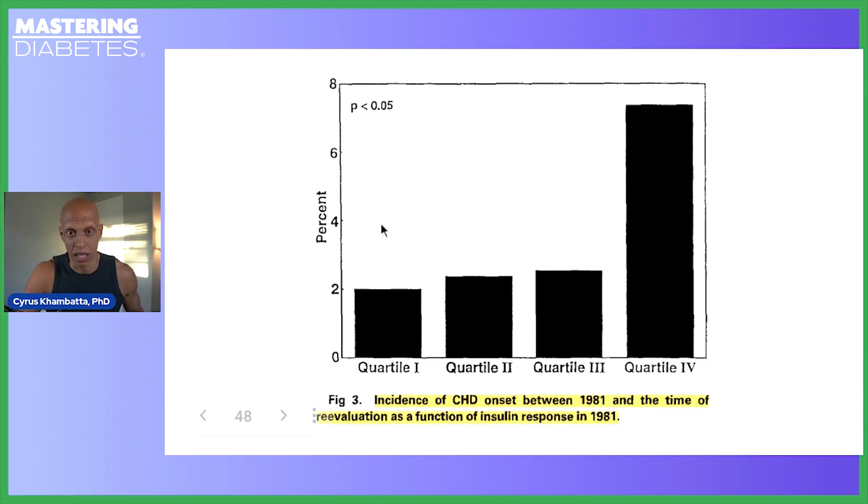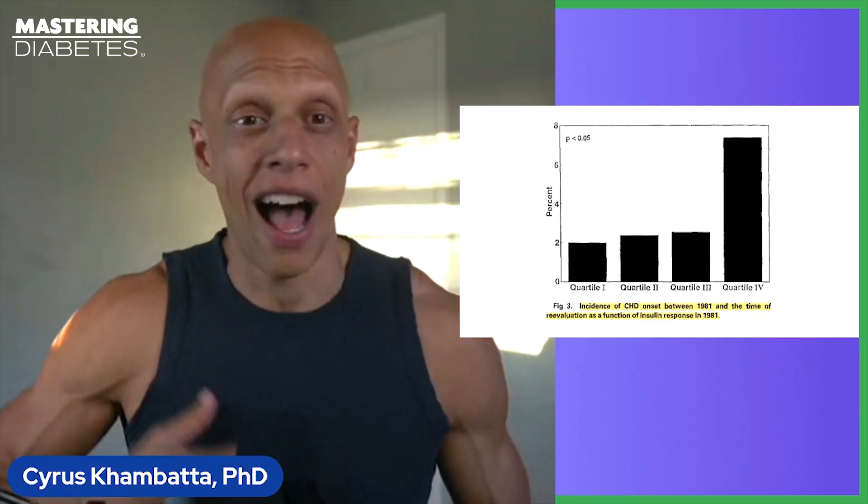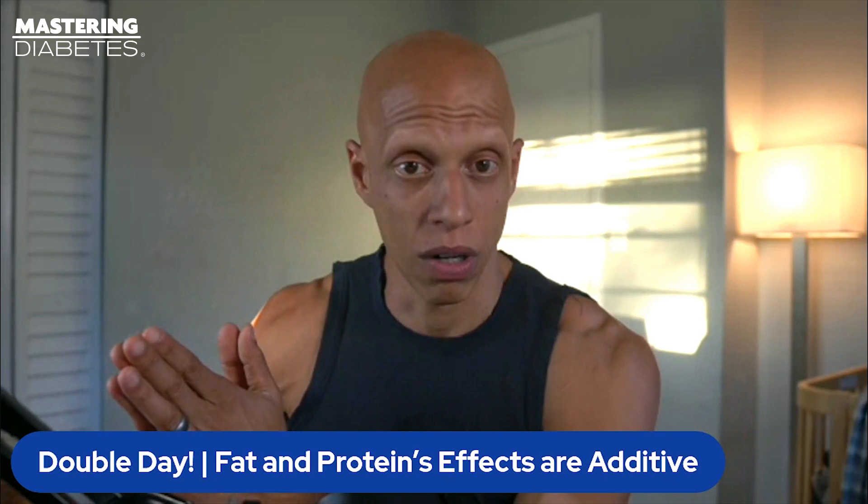No matter how you slice it, being hyperinsulinemic today increases your risk for the development of heart disease and a future cardiac event. There is a direct connection — not even an indirect connection — between your level of insulin resistance today and your risk for a heart attack tomorrow. If the amount of protein and fat you're consuming is low to moderate, that can limit the insulin resistance present in your body and protect you against the development of many chronic diseases, including heart disease — and that is where we want to keep you.